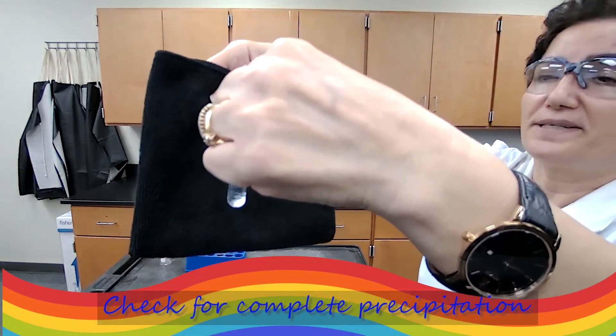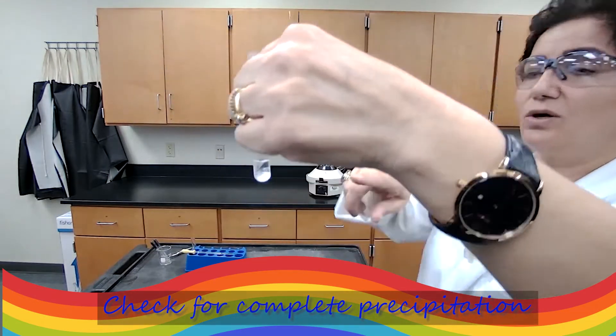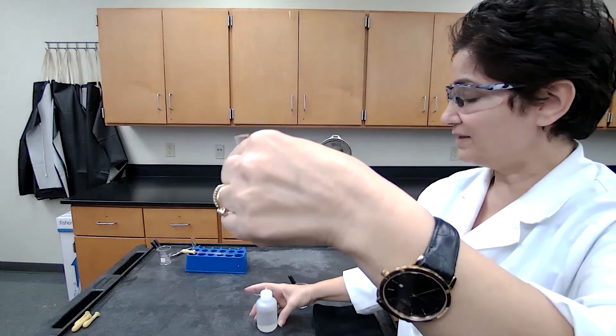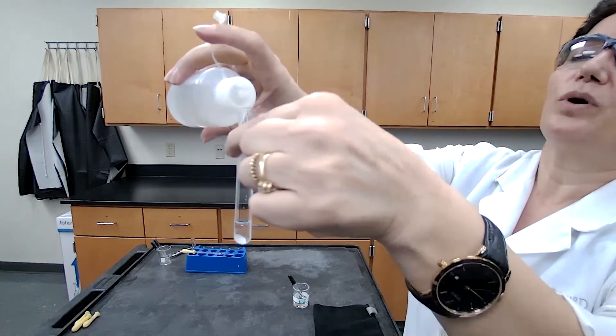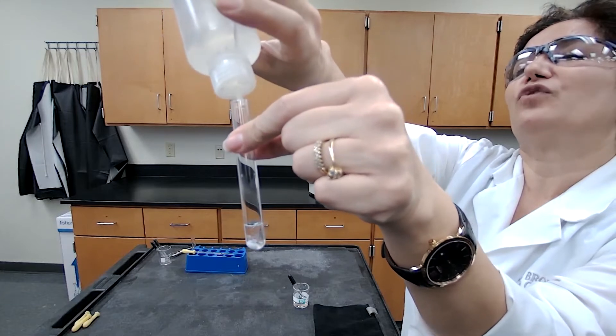To test for complete precipitation, we want to make sure that there is no cation left in the solution. I'm adding the reagent that I used before, which is HCl. I add one extra drop to see if new precipitate forms.